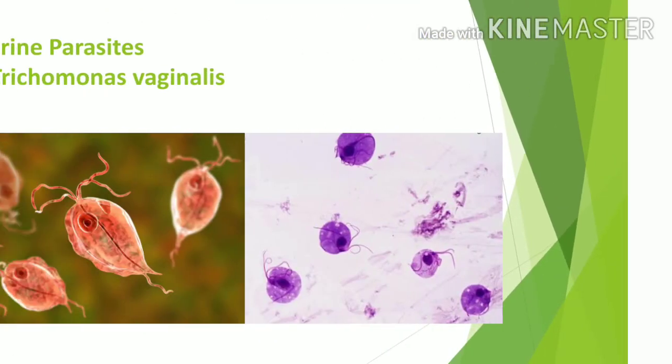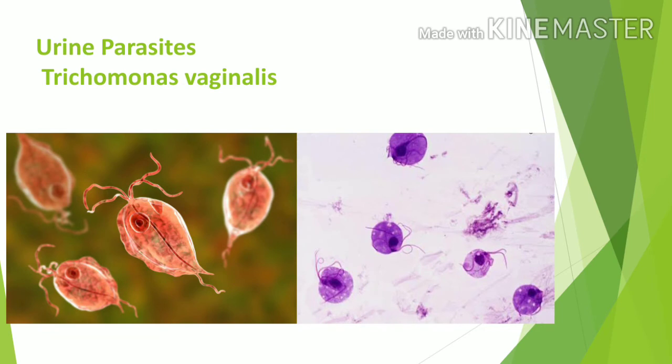Then urinary parasites. In this picture, Trichomonas vaginalis is shown. This is spread through sexually transmitted diseases. It is identified under the microscope — flagella are present in this organism and it moves speedily to other fields.